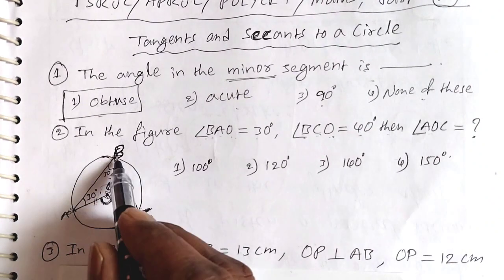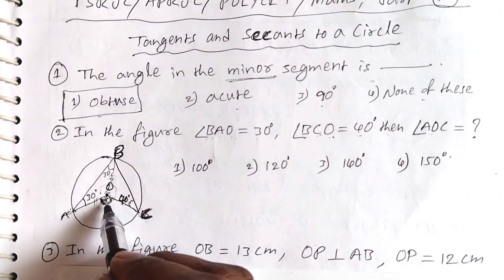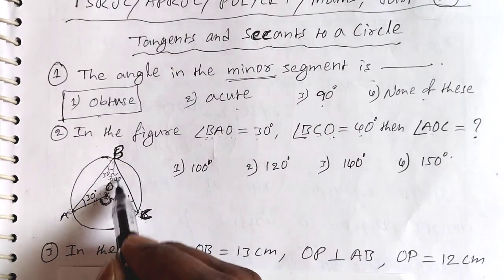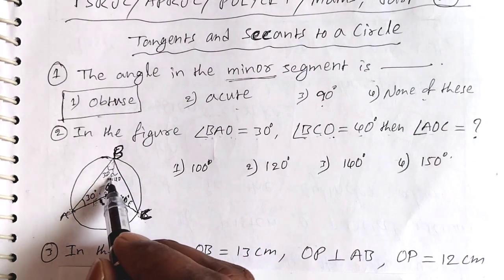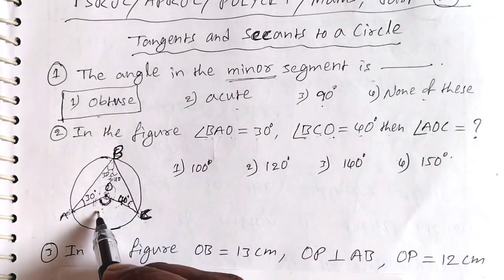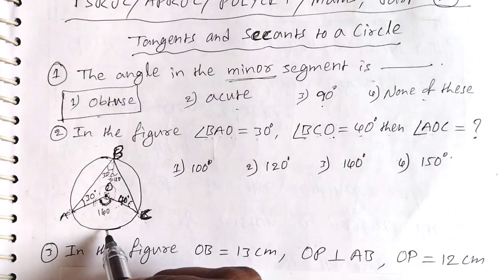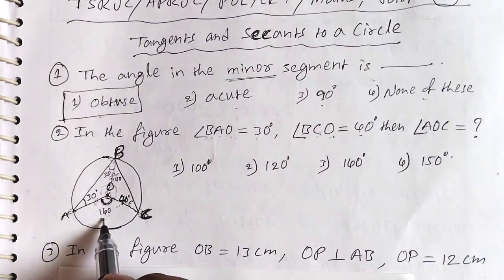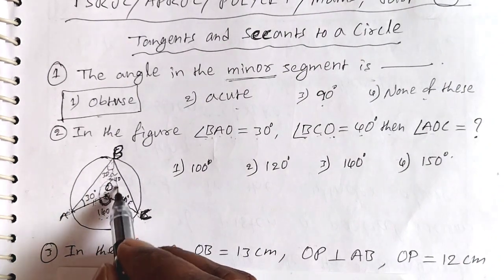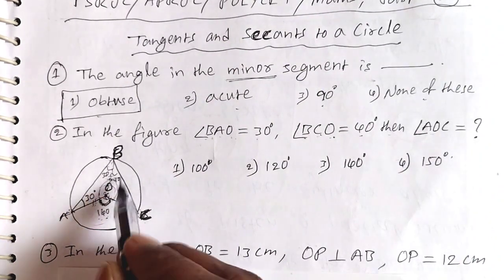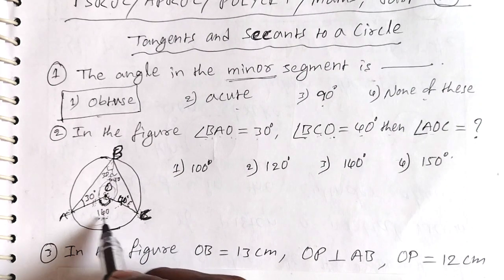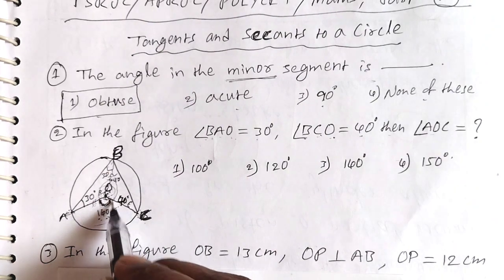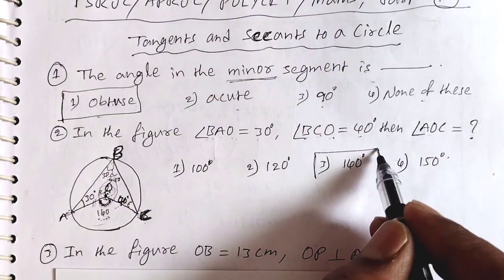So angle OAB plus angle OBC equals 30 plus 40 equals 70 degrees. Therefore angle ABC is 70 degrees. The angle at the center AOC is twice this, so it is 140 degrees. Then 360 minus 140 is 220. But 140 is the answer — the third option.